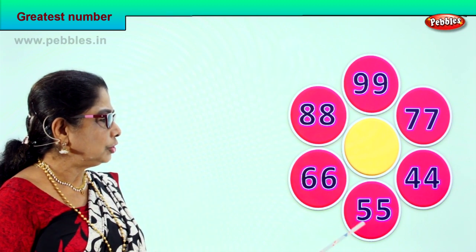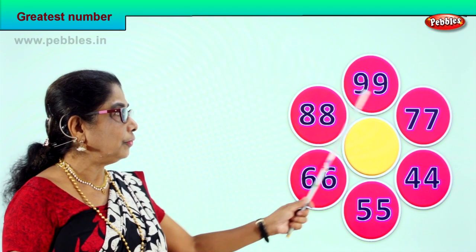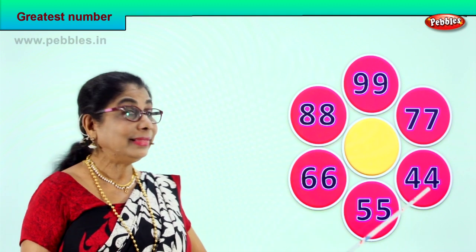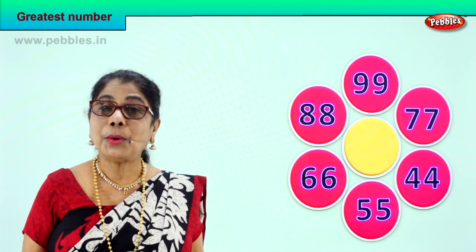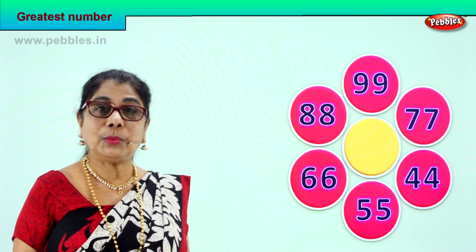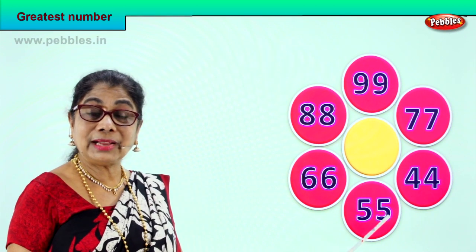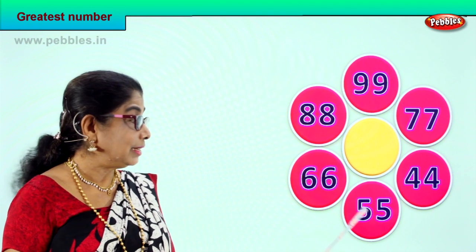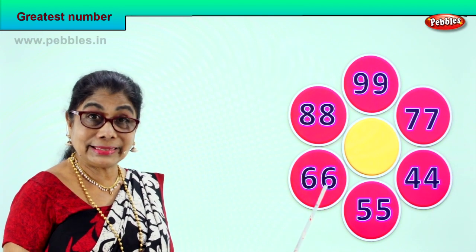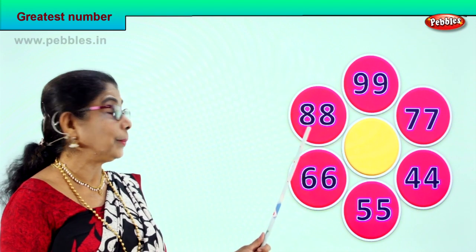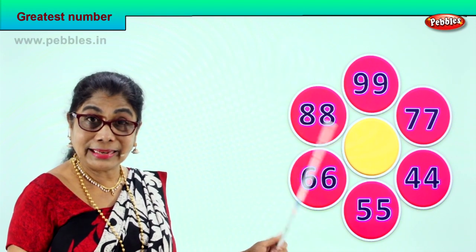Now you have lots of numbers here — 1, 2, 3, 4, 5. There are 6 sets of numbers. Let's go one by one and see. 55: how many tens? 5 tens. 66: 6 tens. 88: 8 tens.